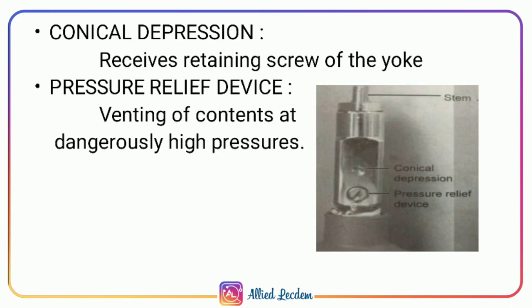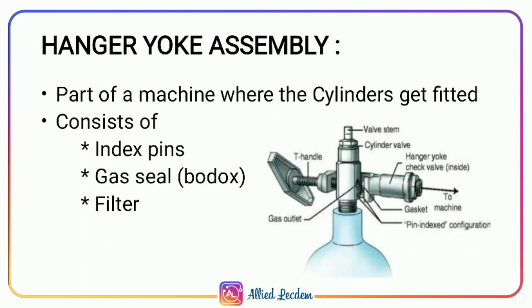The conical depression receives the retaining screw of the yoke. The pressure relief device allows venting of contents at dangerously high pressure. The hanger yoke assembly is the part of the machine where the cylinders are fitted — a special port for mounting of cylinders. It consists of index pins, gas seal, Bodok seal, and a filter. The Bodok seal, similar to a cooker gasket, provides an airtight seal preventing leaking of gases and is made up of neoprene rubber.